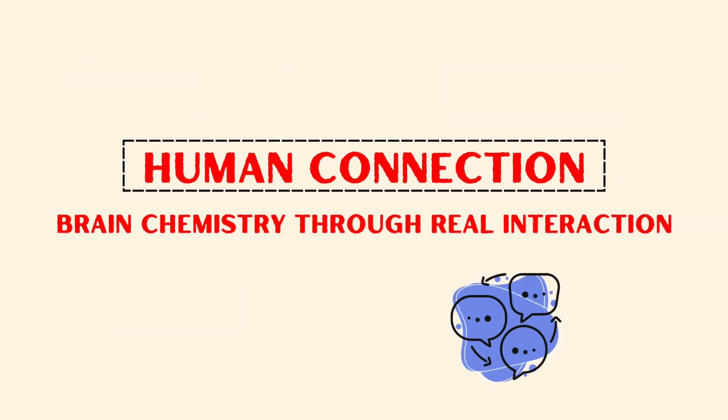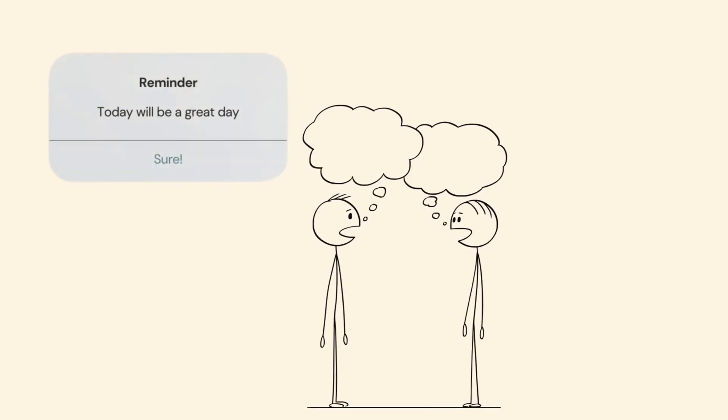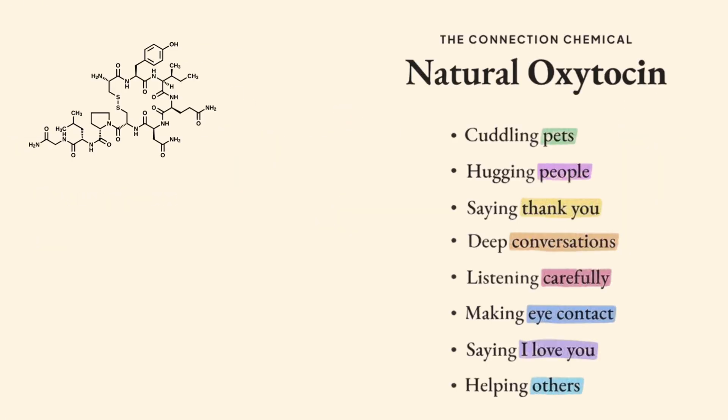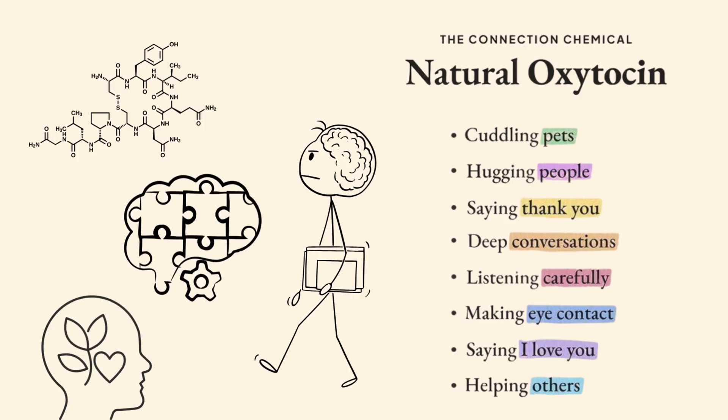Human connection. Brain chemistry through real interaction. Every day, Ethan makes time for one real, face-to-face human interaction. Not voice notes, not texts. Actual connection because oxytocin from real conversations strengthens memory, lowers anxiety, and sharpens thinking.